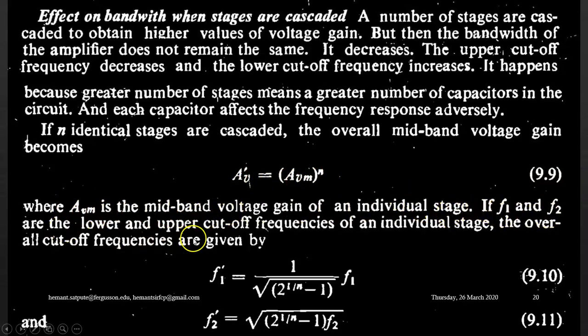If F1 and F2 are the lower and upper cutoff frequencies of an individual stage, then overall cutoff frequencies are given by F1 dash equals 1 upon square root of 2 raised to 1 by n minus 1 into F1, and F2 dash equals square root of 1 upon 2 raised to 1 by n minus 1 into F2.